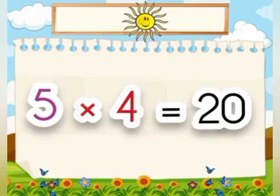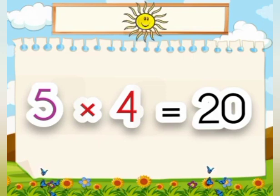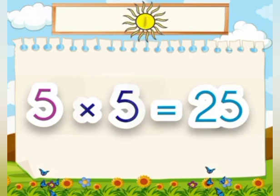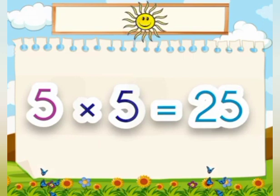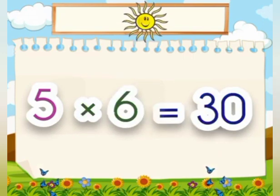4 times 5 is 20. 5 times 5 is 25. 6 times 5 is 30.